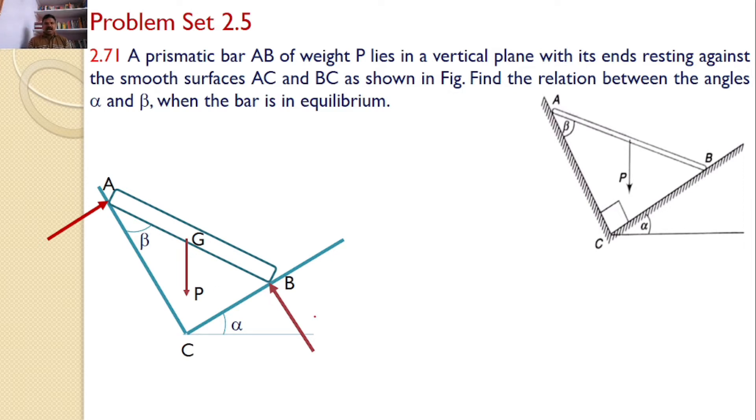Now there are three forces. If three forces are acting on the system, for the system to be under equilibrium, all three forces must intersect at the same point. That means if you extend these, the two forces are intersecting at a particular point, let the point be D.